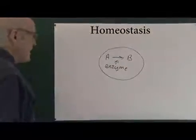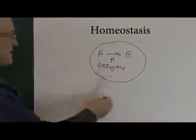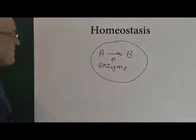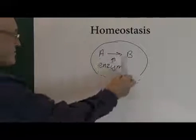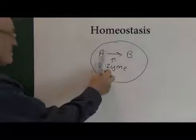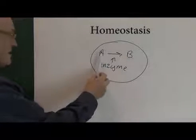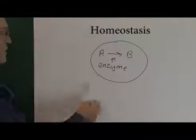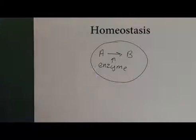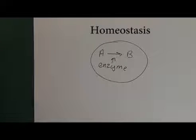Inside this body cell, there's all sorts of biochemistry going on — substance A needs to be converted to substance B. That is a biochemical reaction, and there are many millions of these biochemical reactions going on throughout the body. This is facilitated by an enzyme. In order to have life, we need biochemical reactions, and to have those reactions we need the chemicals and the enzymes. We can start thinking about the physiology of homeostasis in terms of enzymes.